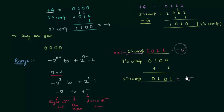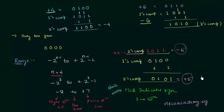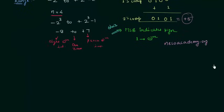In two's complement representation, the MSB — the most significant bit — indicates the sign. If the MSB is equal to 1, this shows the number is negative. You can access the quiz at nasoacademy.org, where there are quizzes for other lectures as well, along with solutions to homework problems.